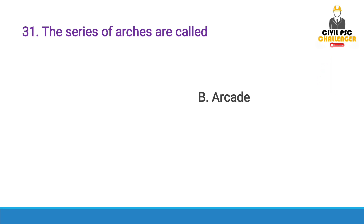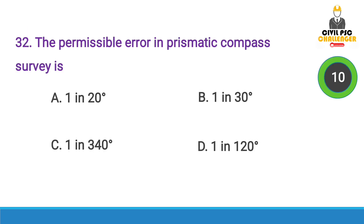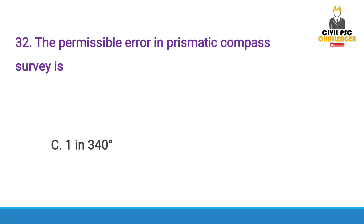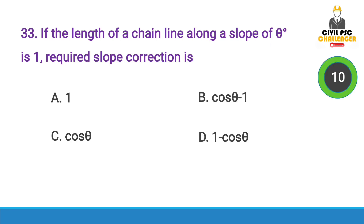Next question: The permissible error in prismatic compass survey is — Answer option C, 1 in 340.